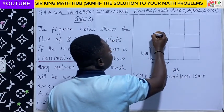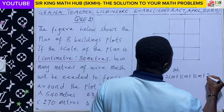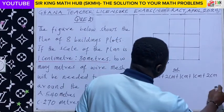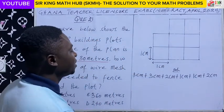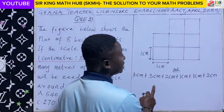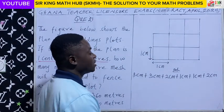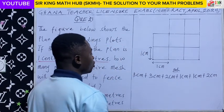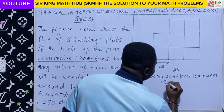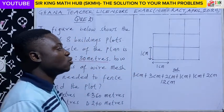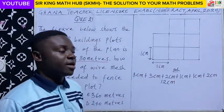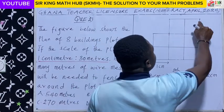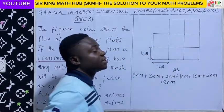From this point to this point, another 1 cm. And then finally, from this point to this point, you will need 2 cm. So now let's simplify: 3 cm plus 3 cm is 6 cm, plus 2 cm is 8, plus 1 is 9, plus 1 is 10, plus 2 is 12. So we are having 12 cm. On the plan, we will need 12 cm of wire mesh to fence around these 8 building plots.